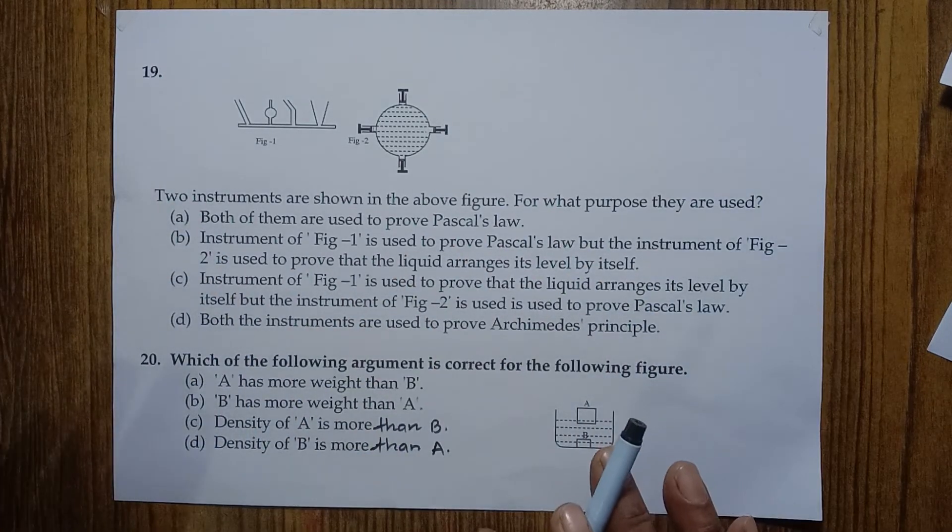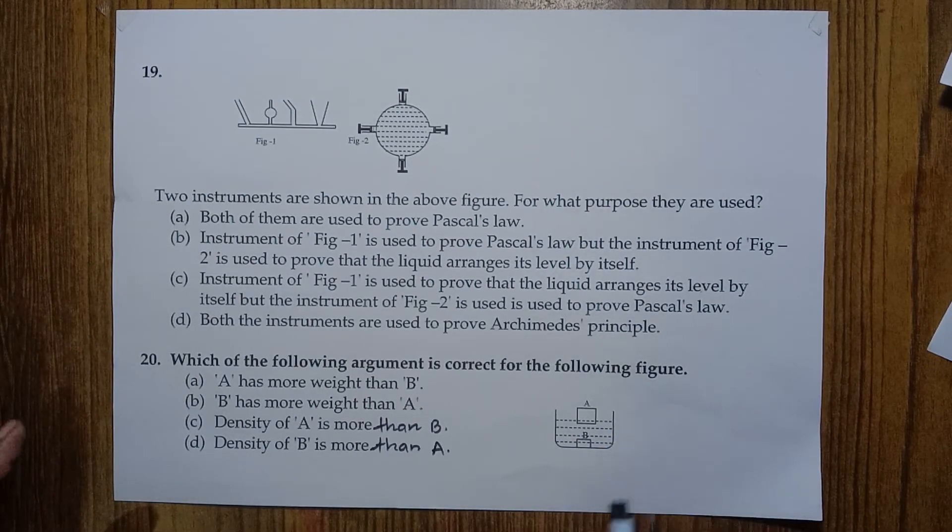Option D — density of A is more than B — is not correct. A body sinks if its density is greater than the liquid, so density of B is greater than the liquid. A body floats if its density is less than the liquid, so A has less density than the liquid. Therefore, density of B is greater than A, and option D is correct. This is how we evaluate the correct options from objective questions on this subject.